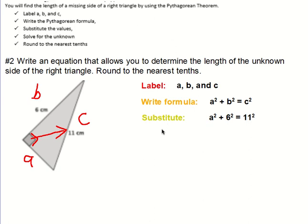Next step, we have to start doing some calculations here because we have to start solving for our unknown. So we have to calculate 6 squared. 6 times 6 is 36. And 11 squared is 11 times 11, which is 121.